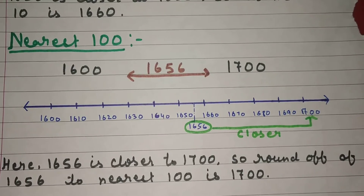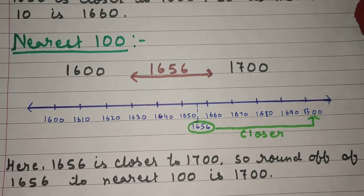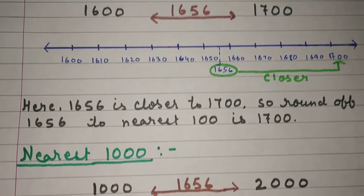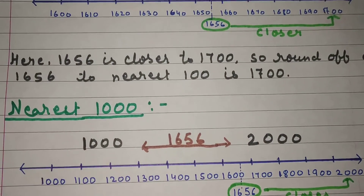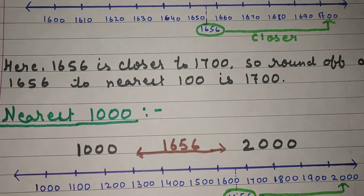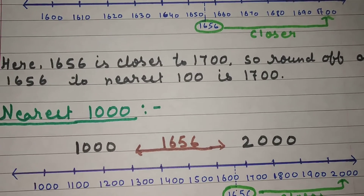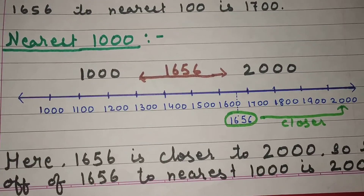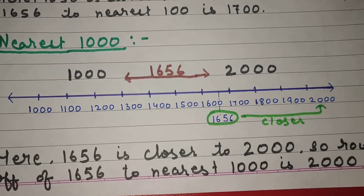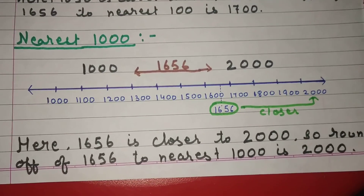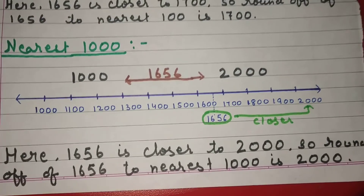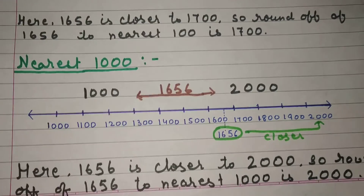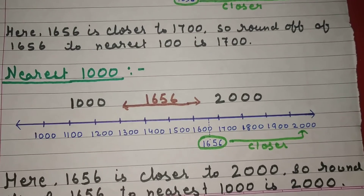So the round off of 1656 to the nearest hundred is 1700. Nearest thousand: 1656 lies between 1000 and 2000, and it is closer to 2000. So the round off of 1656 to the nearest thousand is 2000. That's all for today. Thank you and have a nice day.